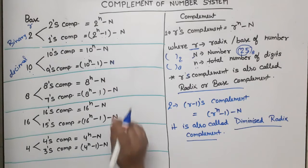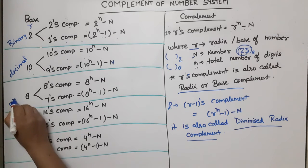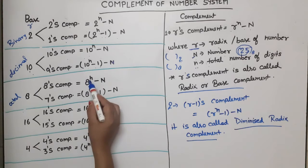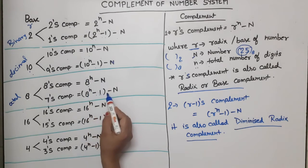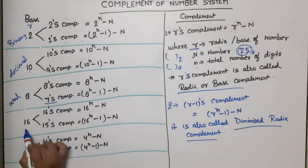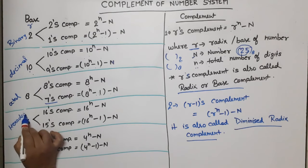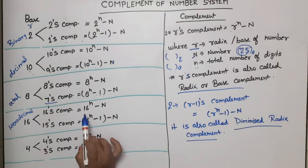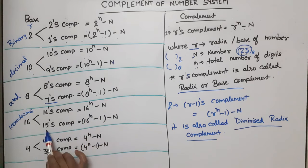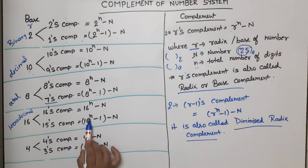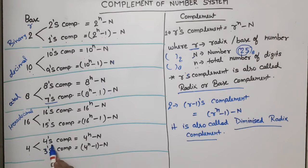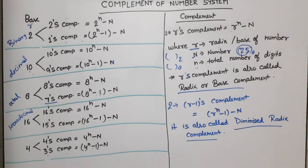For octal: 8's complement = 8^n − N, and 7's complement = 8^n−1 − N. For hexadecimal: 16's complement = 16^n − N, and 15's complement = 16^n−1 − N. For base 4: 4's complement = 4^n − N, and 3's complement = 4^n−1 − N. These are all your formulas — note them down.